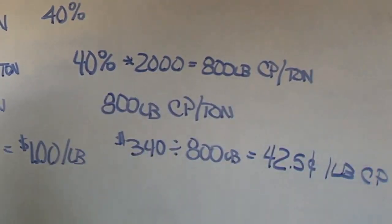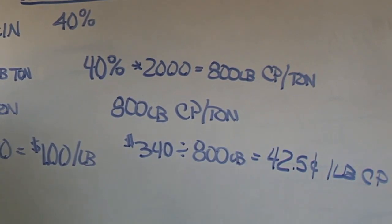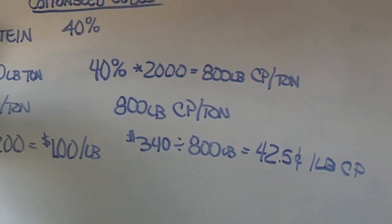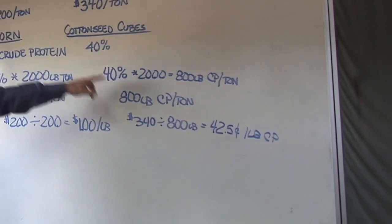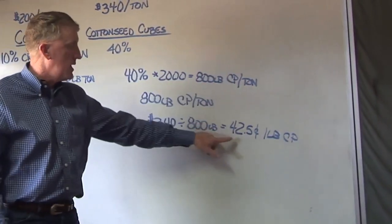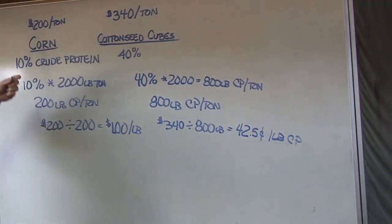So now we can compare those two feeds on an apples to apples basis. If we're looking at protein supplementation, we find out that the protein in corn is costing us a dollar a pound, the protein in the cottonseed cubes, in this particular example, 42.5 cents per pound. And you can do that for any nutrient.